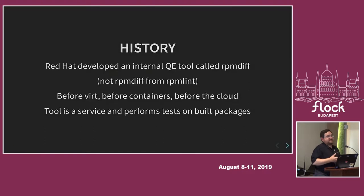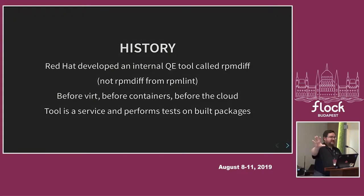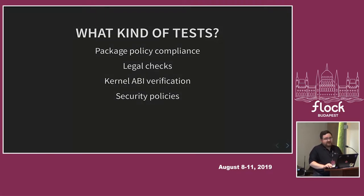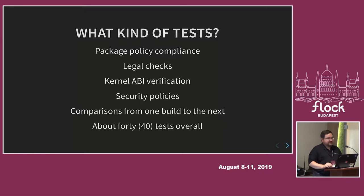RPM Diff runs as a service and performs tests on builds done internally. The service aspect is key — there's no way for a package maintainer to really interact with it at all. It's automatically scheduled, the results are posted, and you have to fix things, sometimes without really knowing what it's testing. It does about 40 tests of varying complexity: package policy compliance — making sure you've named something correctly, that you have an approved license — legal checks, kernel ABI verification, and enforcing security policies like checking for setUID root executables.